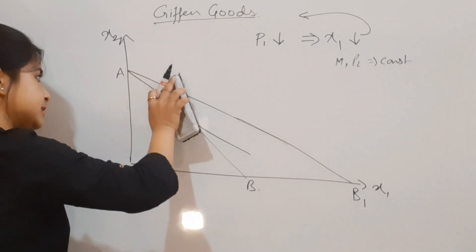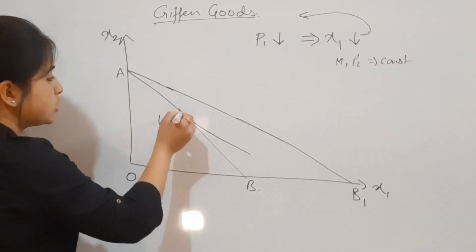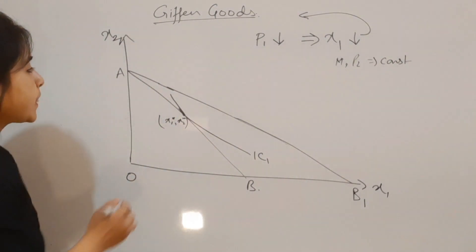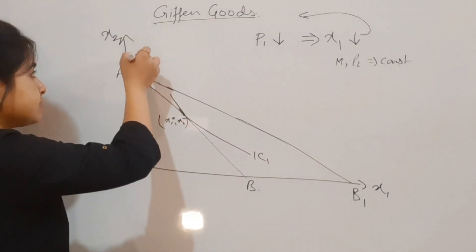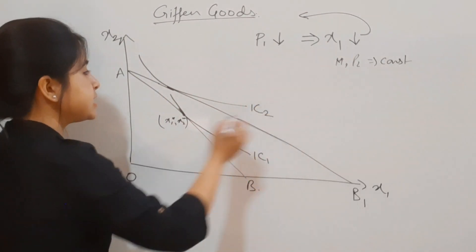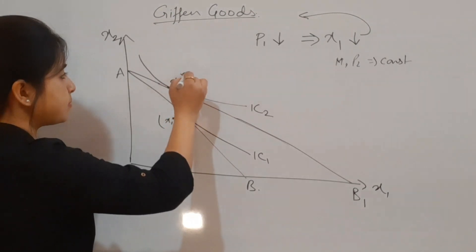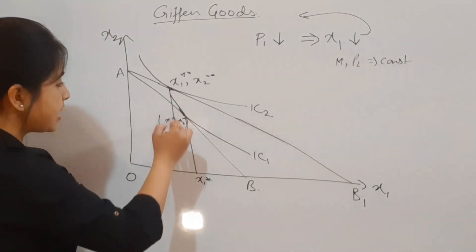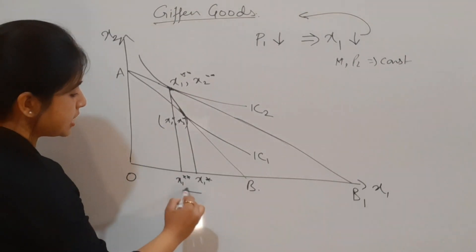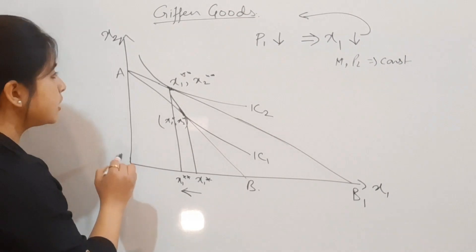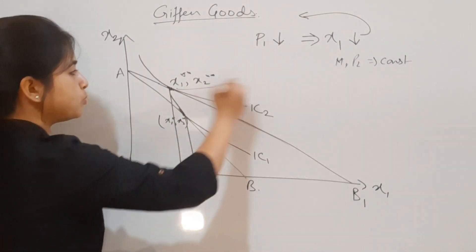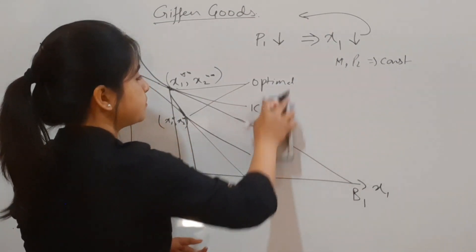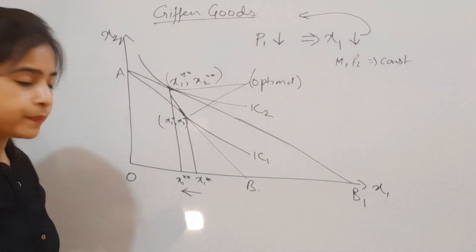The consumption of x1 reduces, so the IC will shift leftward. This is IC2, the point of new consumption: x1 double star and x2 double star. As you can see, consumption has reduced. Previously x1 star was here, now it's at x1 double star. There's a reduction in consumption of x1. These are both optimal consumption points.